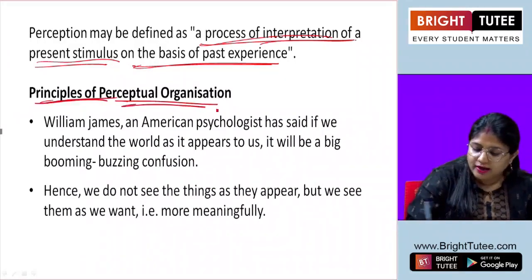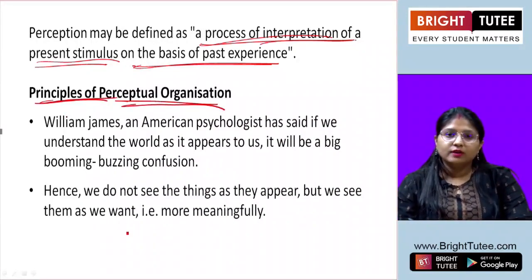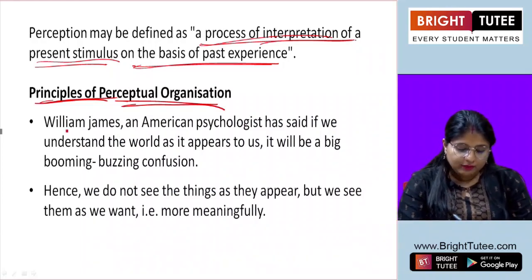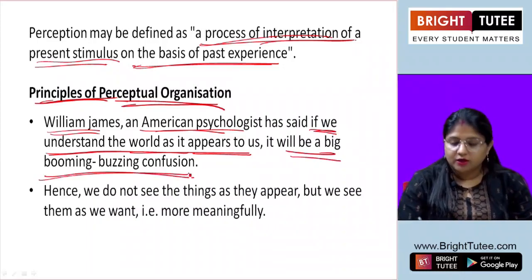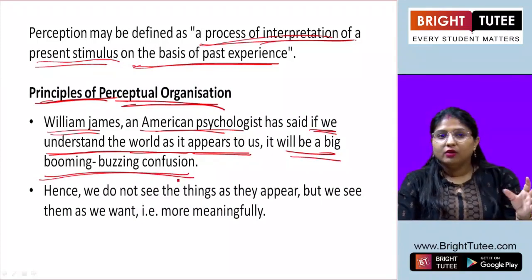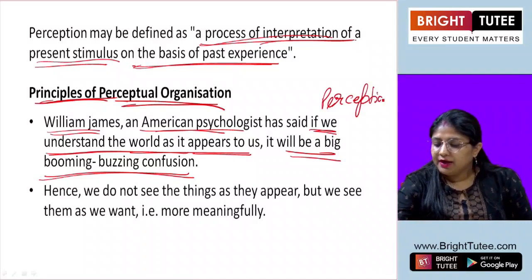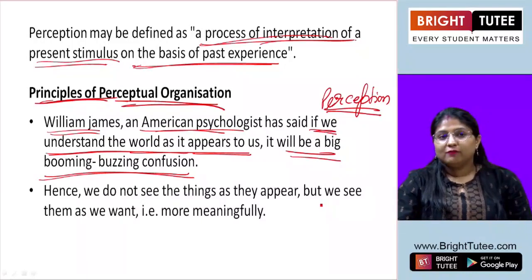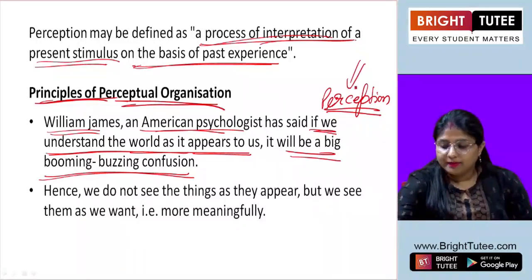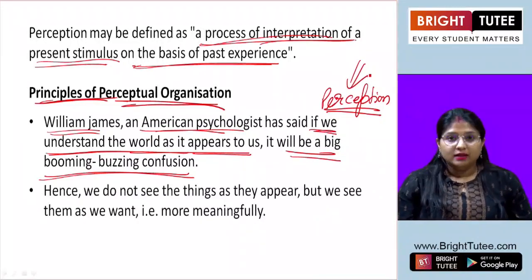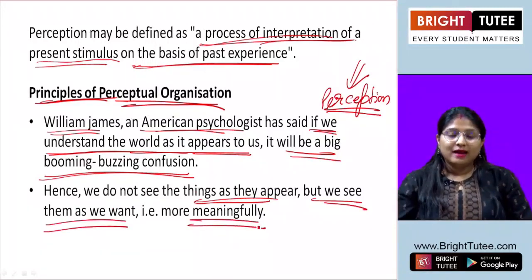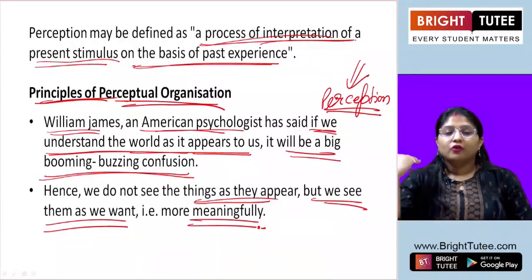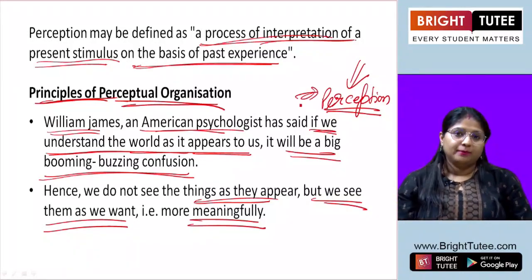Next, we have the principle of perceptual organizations. There are numerous scientists who have worked on this. First, we have William James, an American psychologist, who said that if we understand the world as it appears to us, it will be a big booming buzzing confusion. We will not be able to understand anything at all. The role of perception is key here. Whatever we see or hear, we need to understand it in a proper manner. We do not see things as they appear, but as we want — more meaningfully — because of the knowledge and perception enabled by the brain.